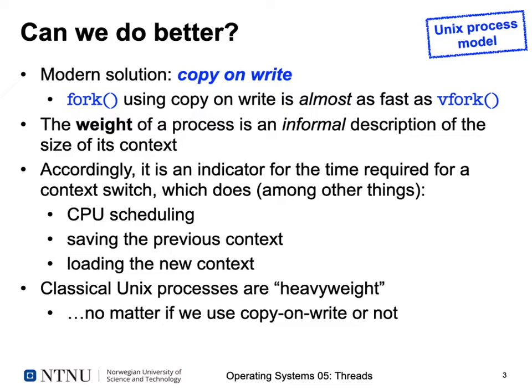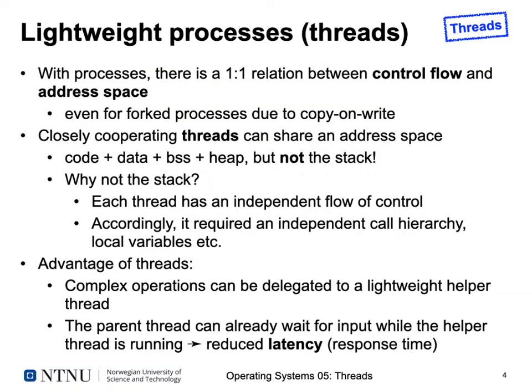Classical UNIX processes created using fork are what we call heavyweight processes. This is true regardless of whether we use copy-on-write, because we still have to go through the kernel for all these operations, which is quite costly. An alternative was introduced relatively soon, and this alternative is usually called lightweight processes or threads.